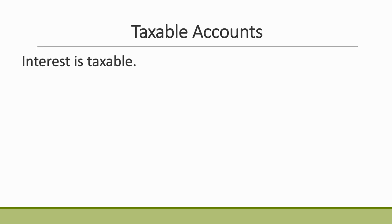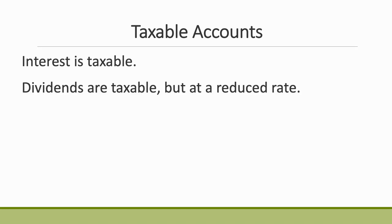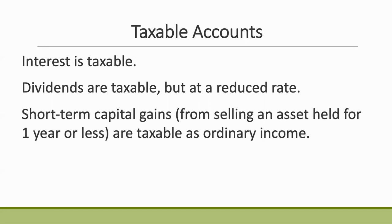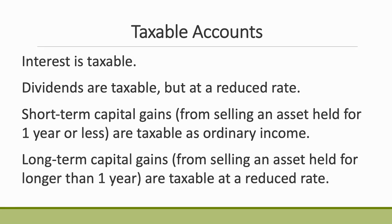In taxable accounts, interest is taxable, dividends are taxable at a reduced rate, and short-term capital gains — meaning you held the asset one year or less before selling — are taxed at ordinary income tax rates. Long-term capital gains, where you held the asset longer than one year, are also taxable as income but at a lower rate, just like dividends.